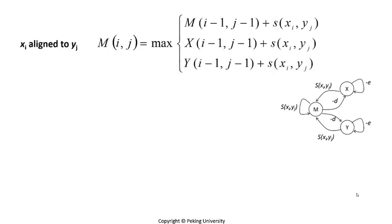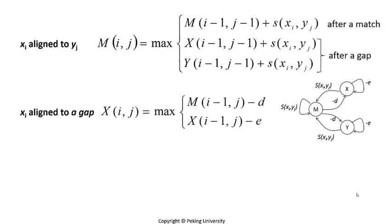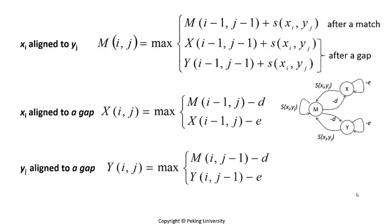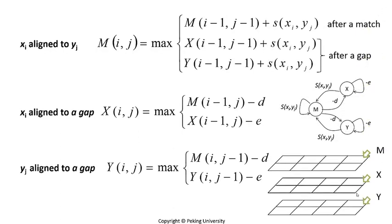Let's take a closer look at each formula. The recursion considers different alignment states. When aligning x_i to a gap, which is opening a new gap, a penalty of d is subtracted.